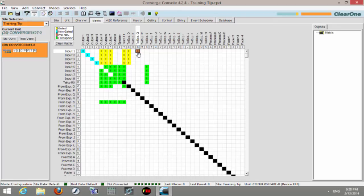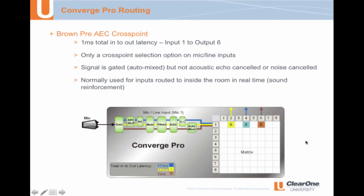We're going to focus on the brown cross point today and in particular how we might use it. To do that, I'm going to show you a different slide that illustrates what portions of the circuit each of the cross points go through. Here we see a depiction of the input signals: input one being routed to output two through a yellow cross point, input one to output four through a blue cross point, and input one to output six through a brown cross point. You can see that the different colors represent different circuit paths.